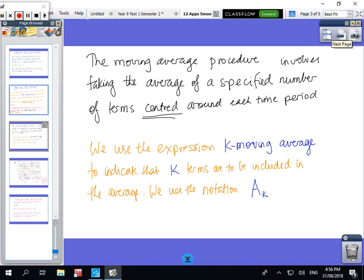The moving average process or procedure involves taking the average of a specified number of terms, centered around each time period. We use this expression the k moving average, like the three point moving average, the four point moving average, to indicate that we're using some number of terms to be including in the average and they use this notation a_k as average.